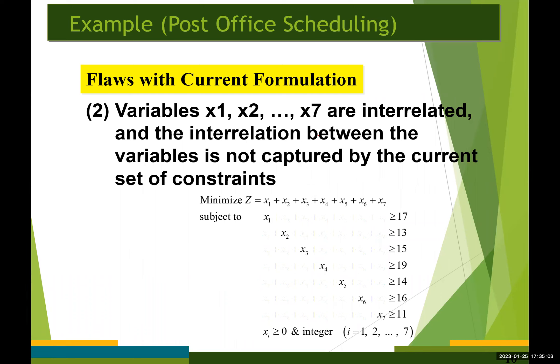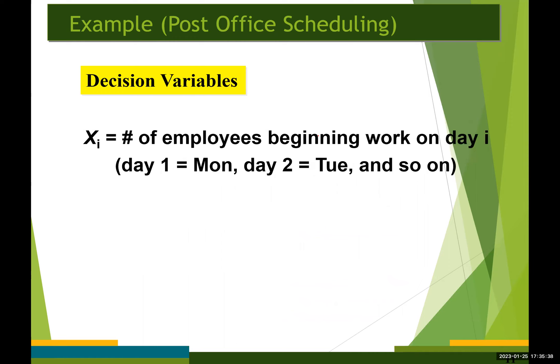The key to correctly formulating this problem is to realize that the primary decision is not how many people are working each day, but how many people begin working on each day of the week. With this in mind, we define the decision variable as the number of employees beginning work on each day. The keyword here is 'beginning work each day.'